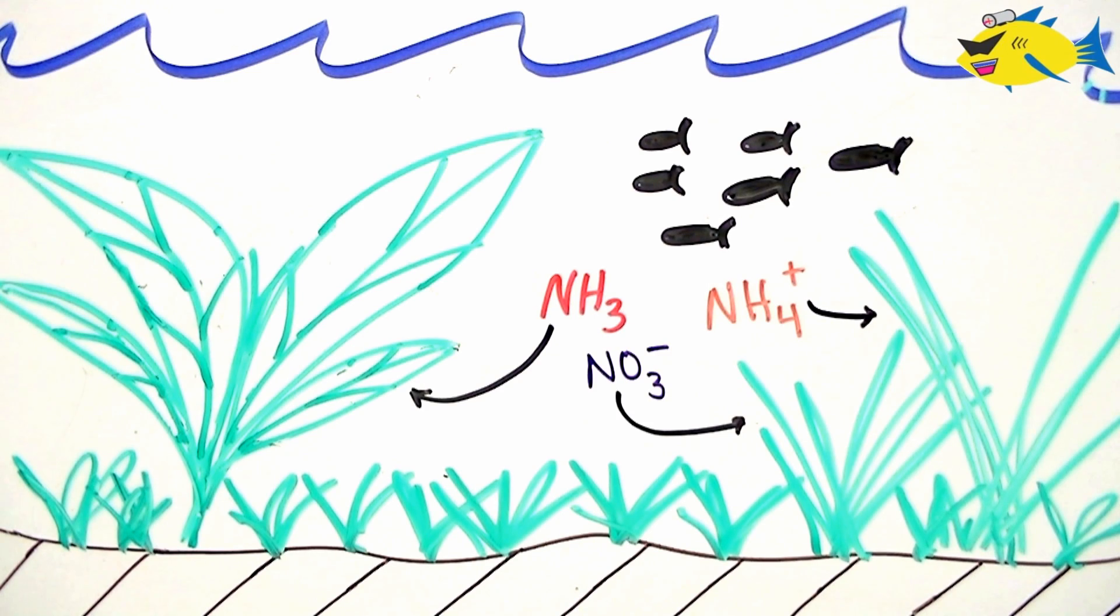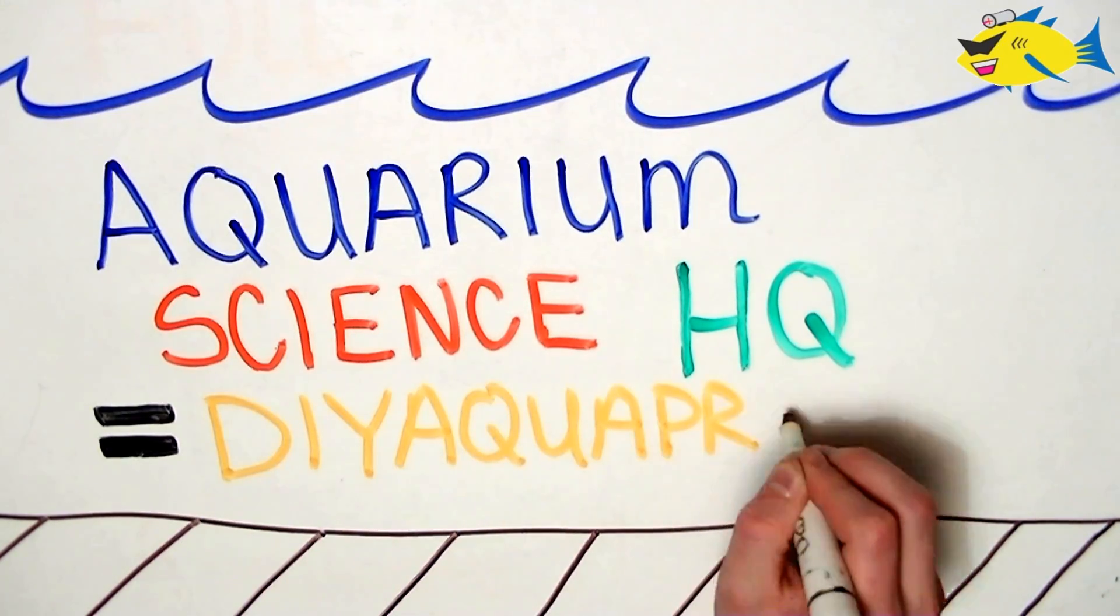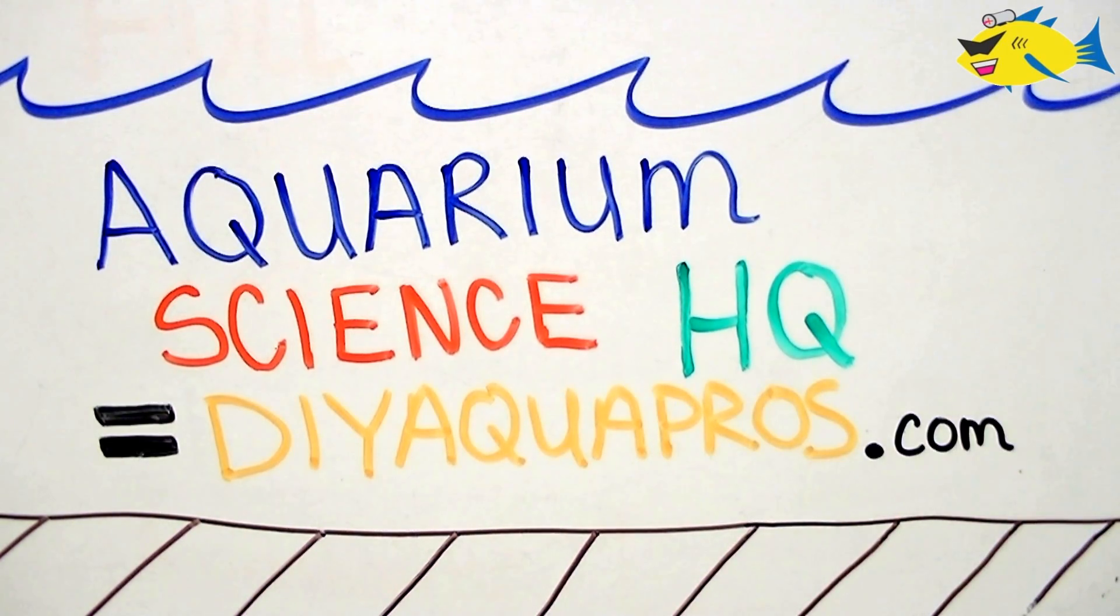Running a traditional filter on your heavily planted aquarium might not always be necessary due to the ability of plants to remove several forms of nitrogen that may harm your fish. To learn more about nutrient uptake by plants and techniques to help you master your planted aquarium, check out more of our aquarium science videos on our website.